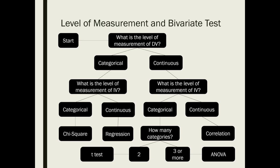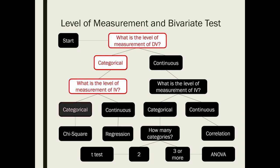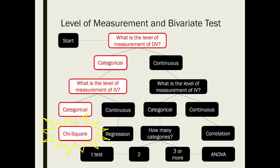When we take a look at this flowchart, we know that if the level of measurement of both the dependent variable and the independent variable are categorical variables, then we are going to use a chi-square test to see if the independent variable may have a significant impact on the dependent variable.